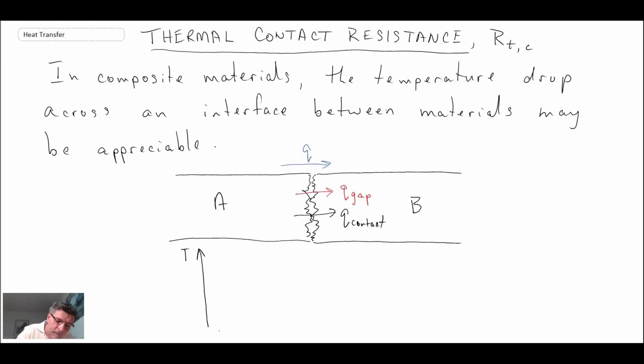So here we have a plot showing the temperature distribution and we can go from a temperature up here in material A, then we go down to a temperature in material B. But the thing that is notable is the fact that we have this big jump that occurs across the gap.